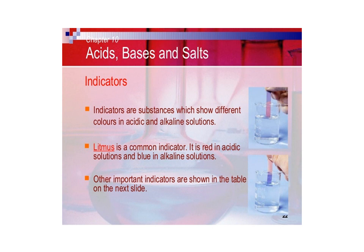Now, indicators. Indicators are those substances which differentiate between acidic and basic substances. A common indicator is litmus paper, which turns red in acidic solution and blue in basic solution, as you can see in the figure.